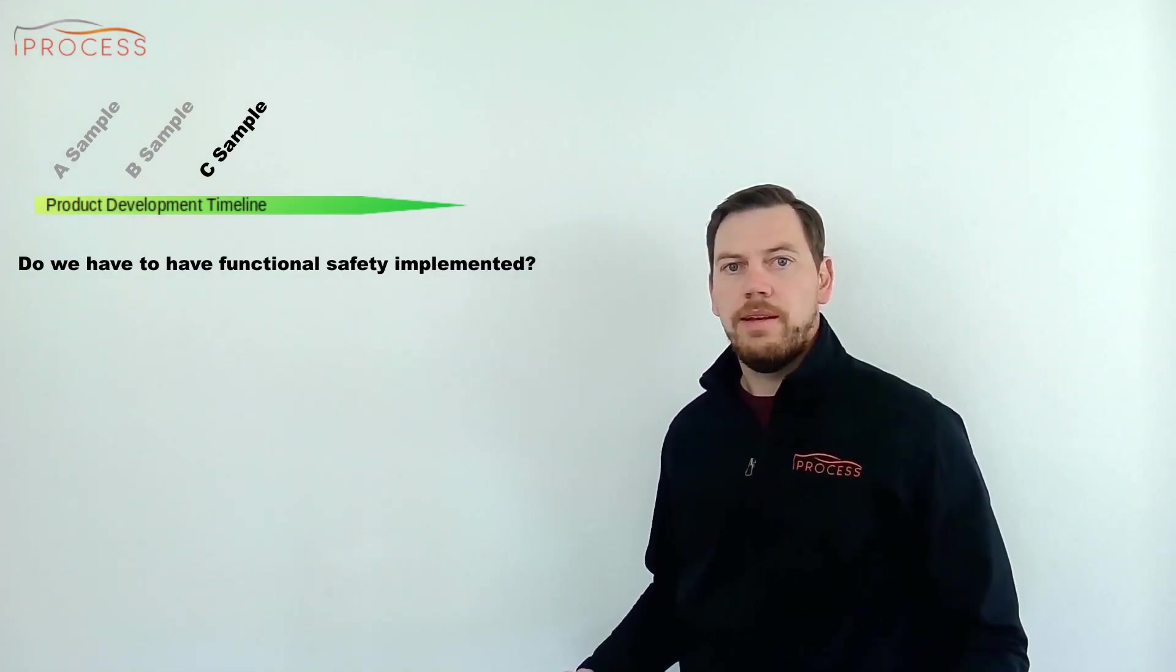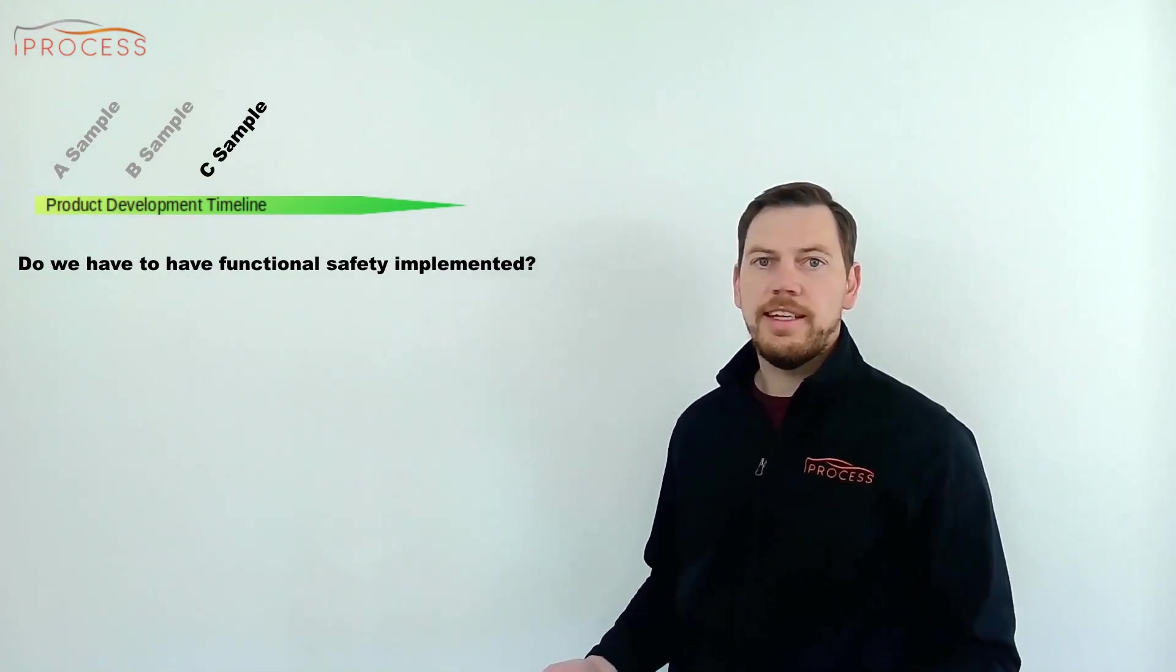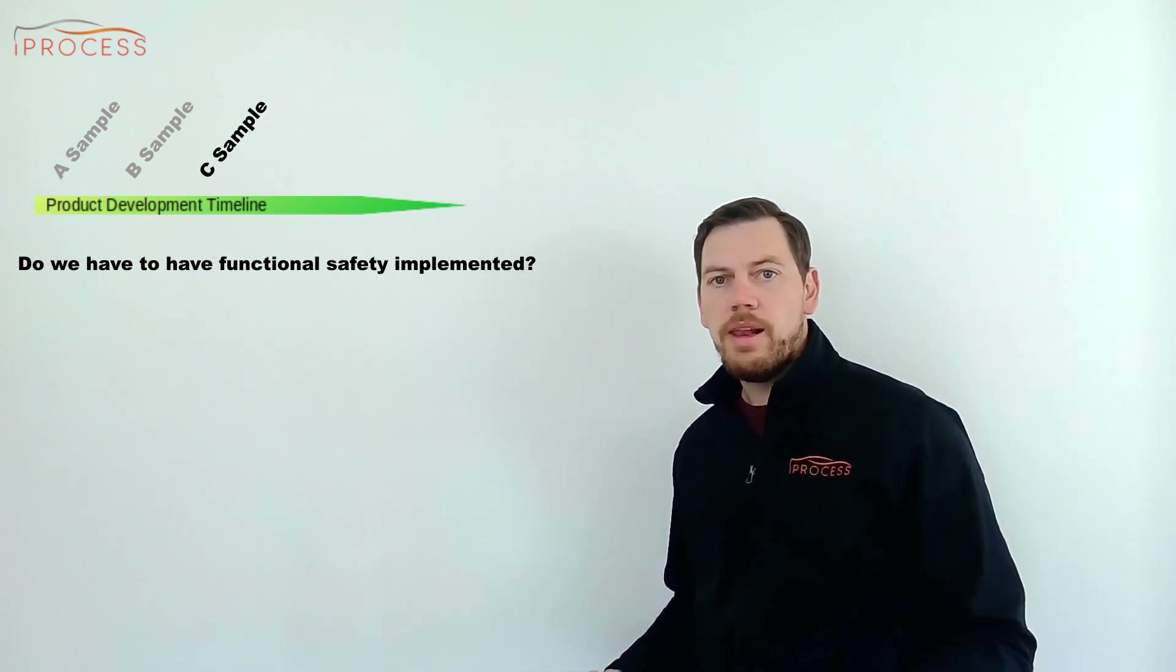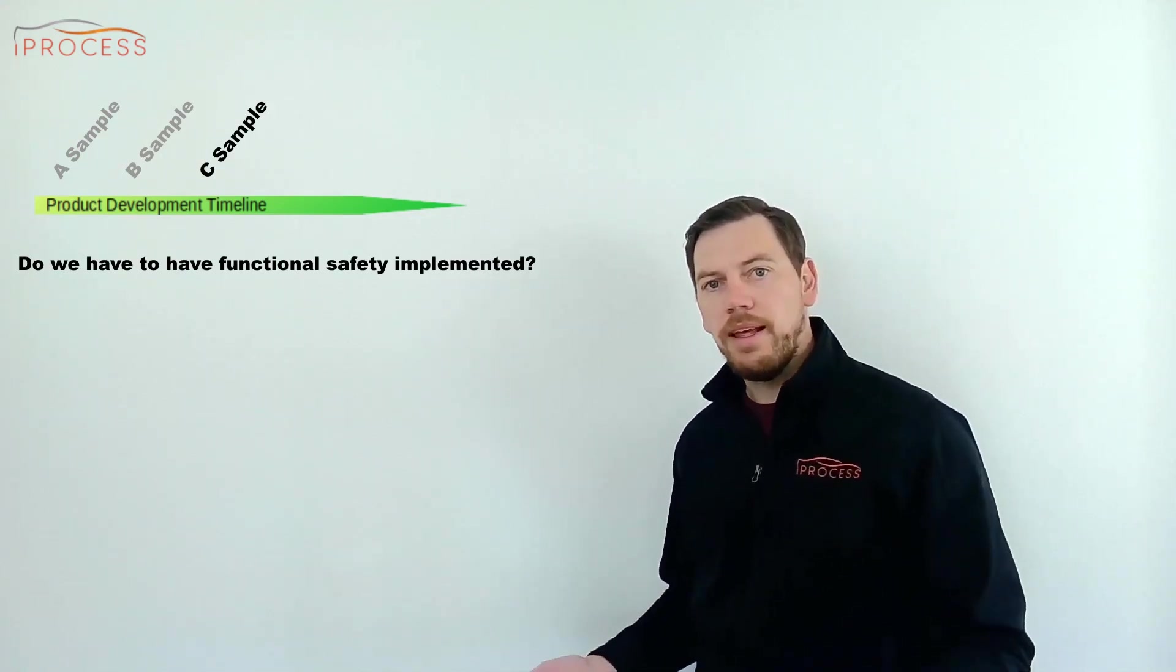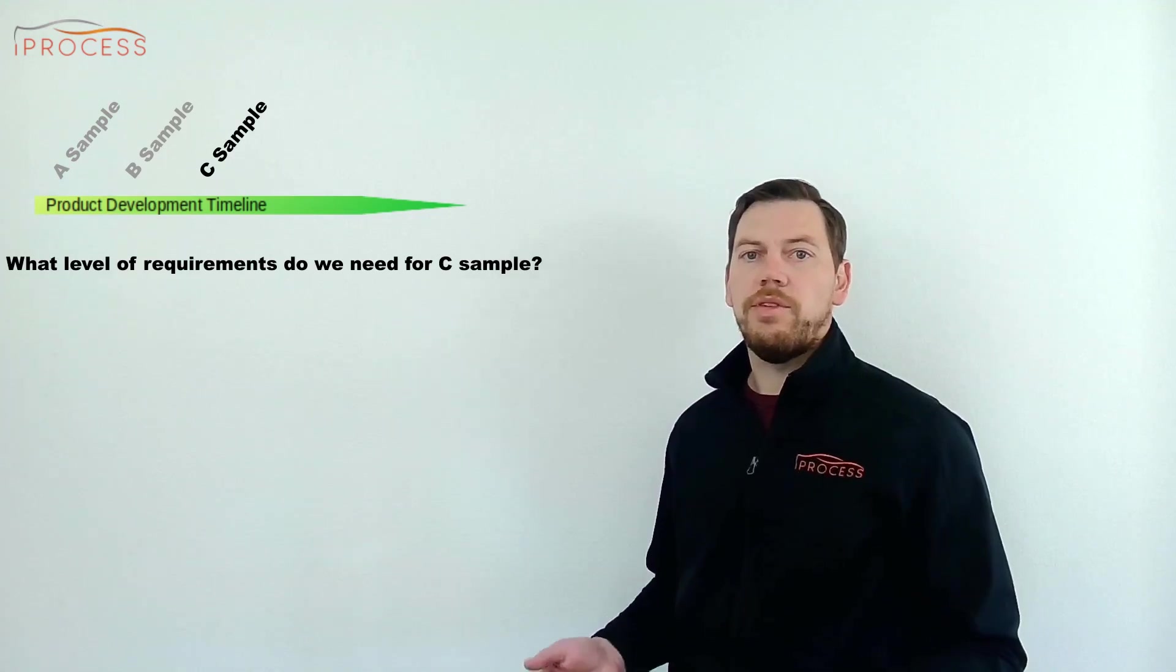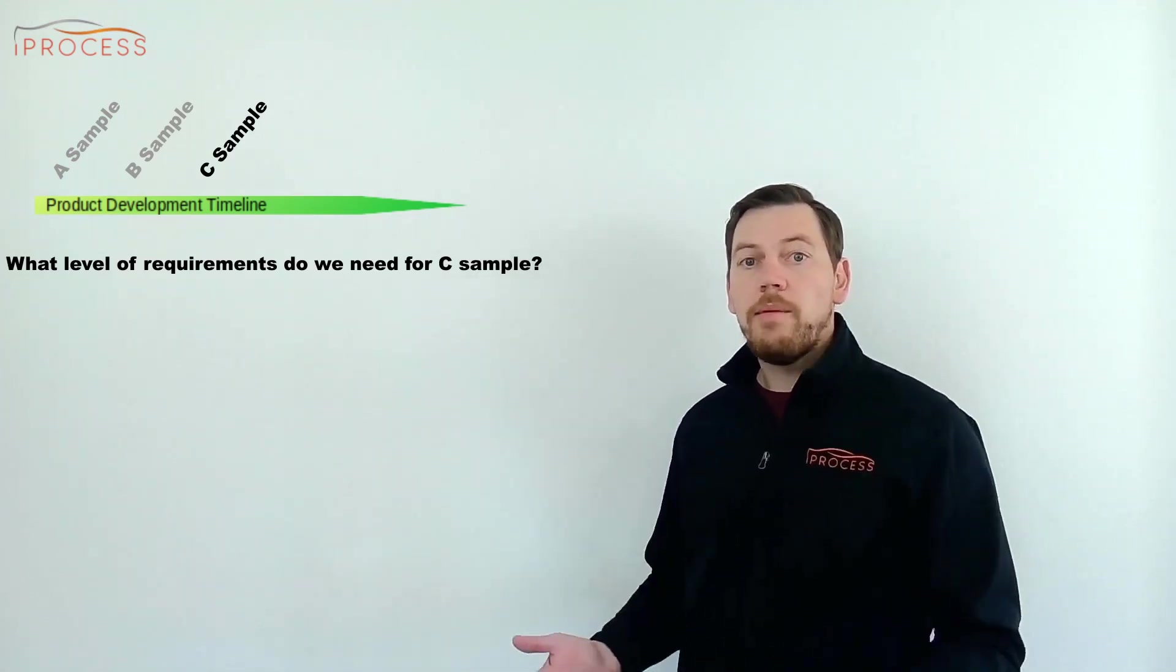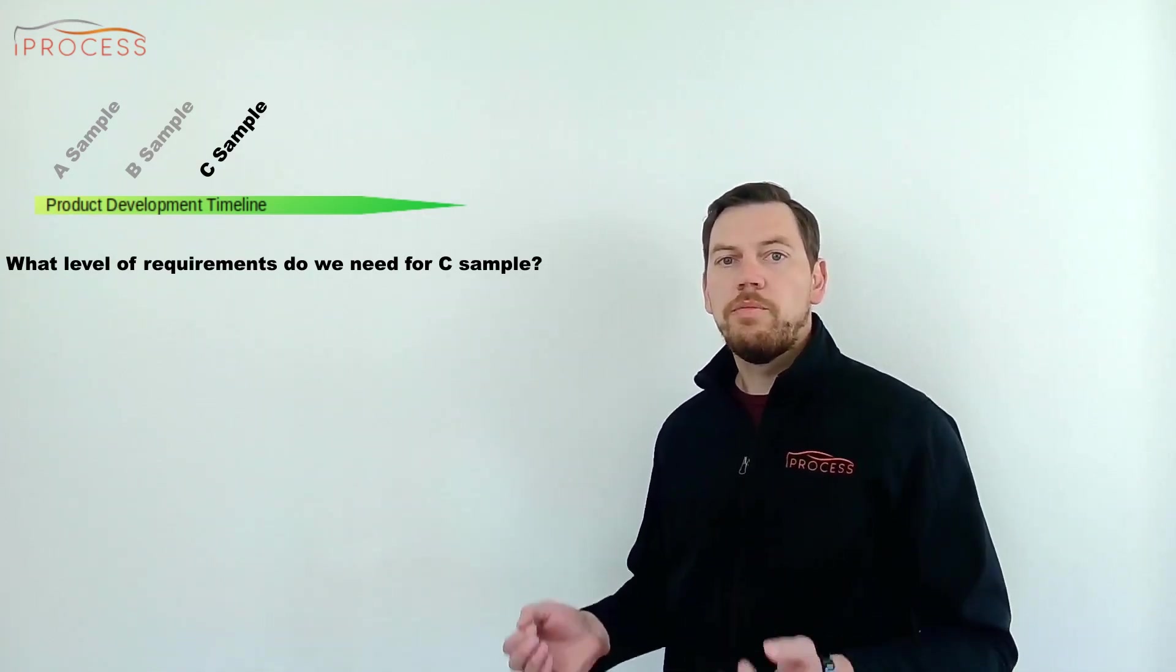Back to our three questions. Do we have functional safety implemented? Functional safety has to be fully implemented and active in the C samples. Application of parameters happens in the early C sample and verification and validation of the FUSA effectiveness and reliability are then performed. What level of requirements do we need for C samples? Requirements are now frozen. A strict change management process should be in place.